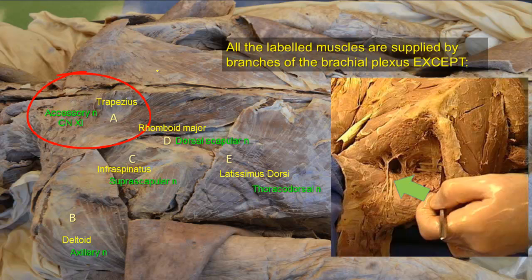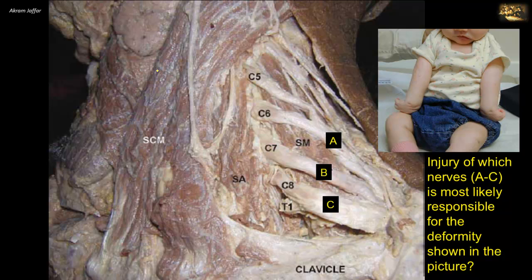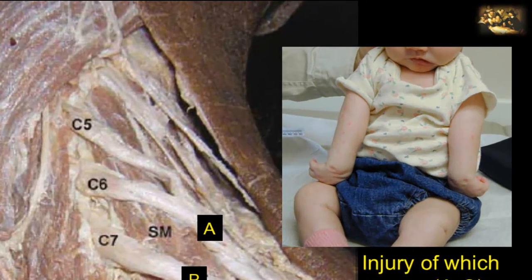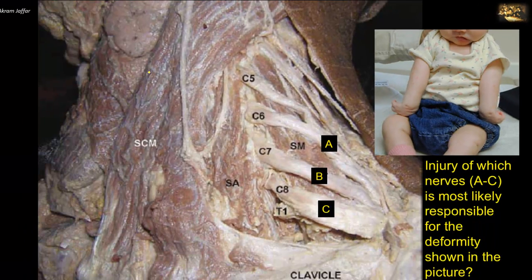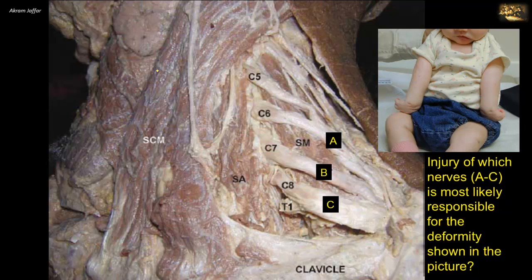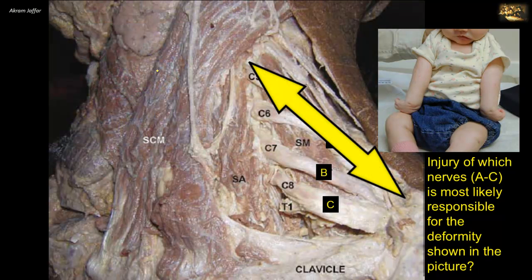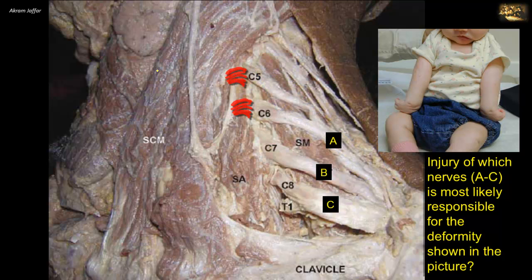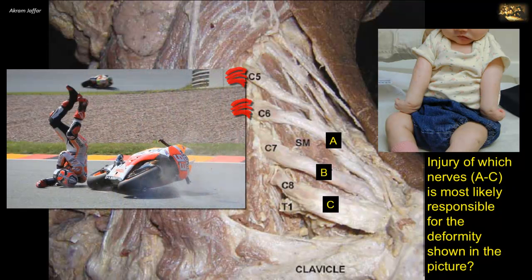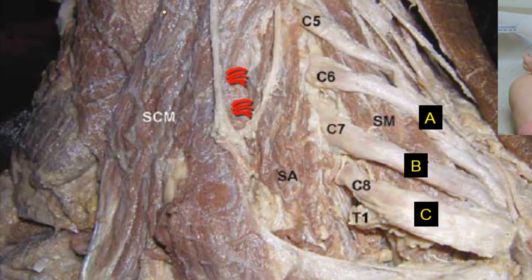The nerve can be seen on the deep side of the upper part of the muscle. Injury of which nerves A to C is most likely responsible for the deformity shown? The deformity results from an upper brachial plexus injury following excessive displacement of the head to the opposite side and depression of the shoulder on the same side — in this infant because of difficult labor, resulting in traction, stretching, and tearing of C5 and C6 roots. In adults, similar injury might follow a blow or fall on the shoulder, especially from a motorcycle accident. Here you can see the dissection of the roots and trunks of the brachial plexus — the supraclavicular portion.